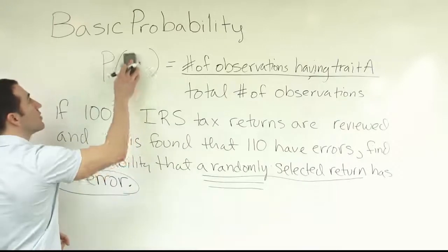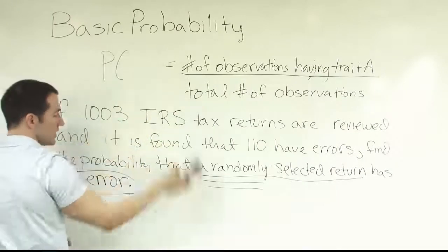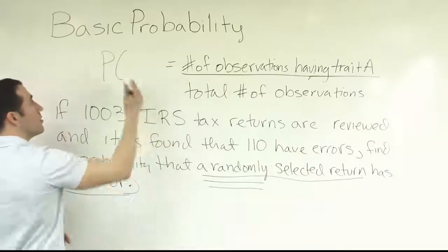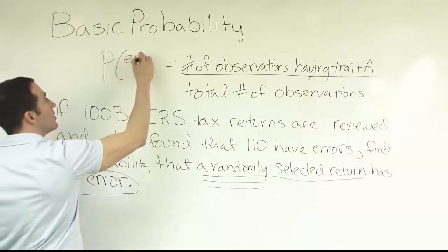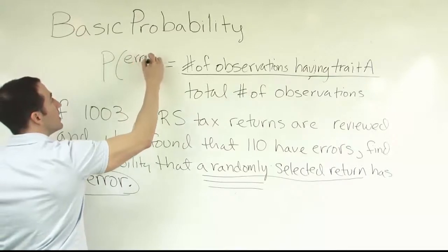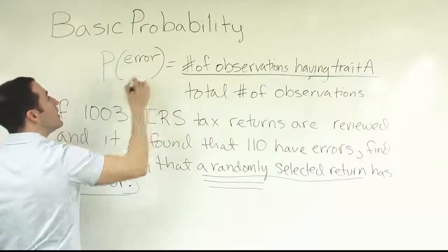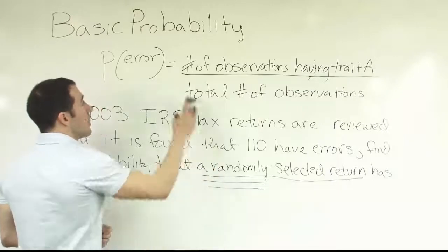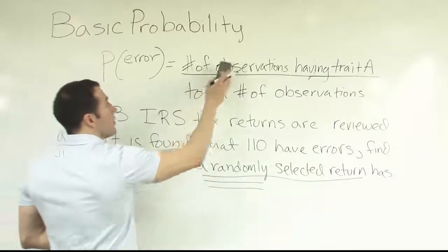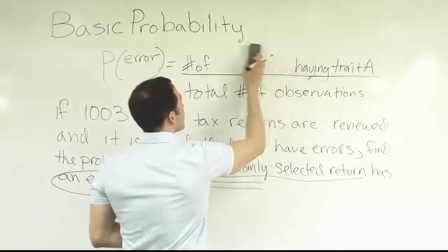We want to know the probability that the return has an error. I'm going to work with this and start my statement. Instead of probability of A, I'm going to say 'probability of an error' in parentheses. Then I'm going to look at the number of...